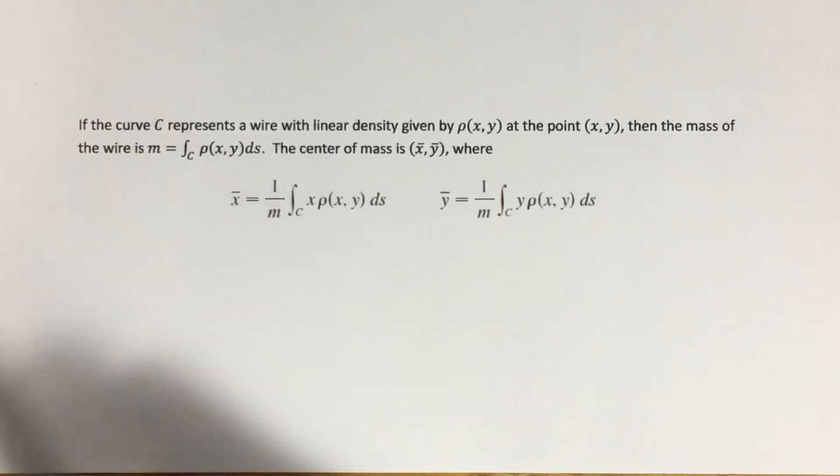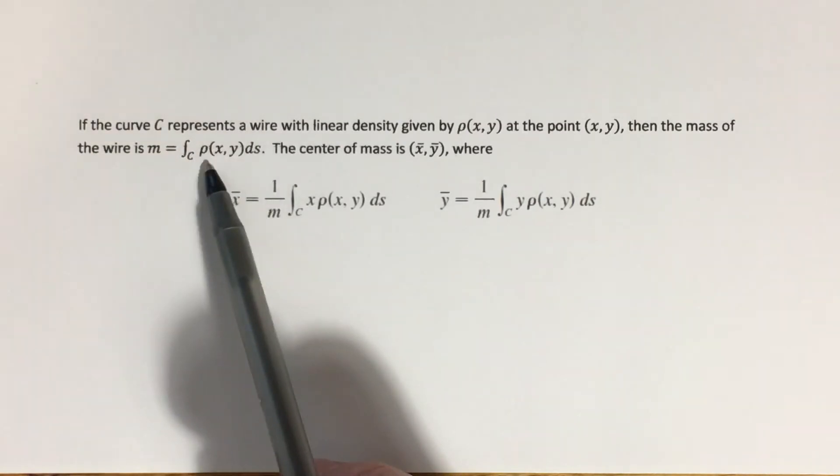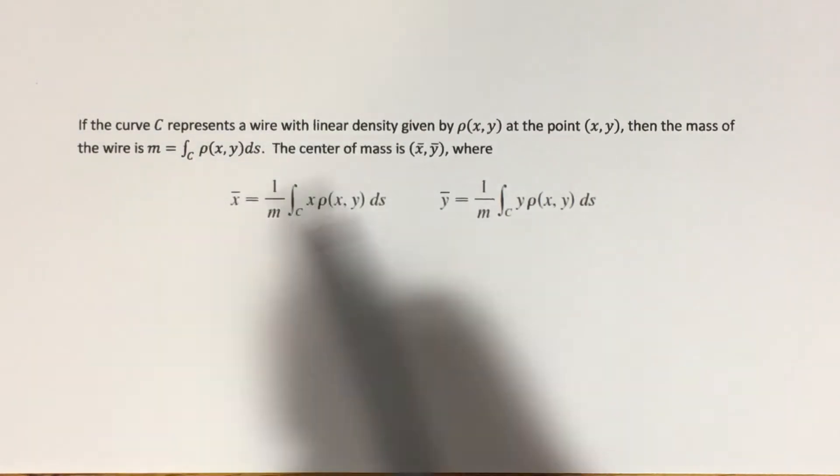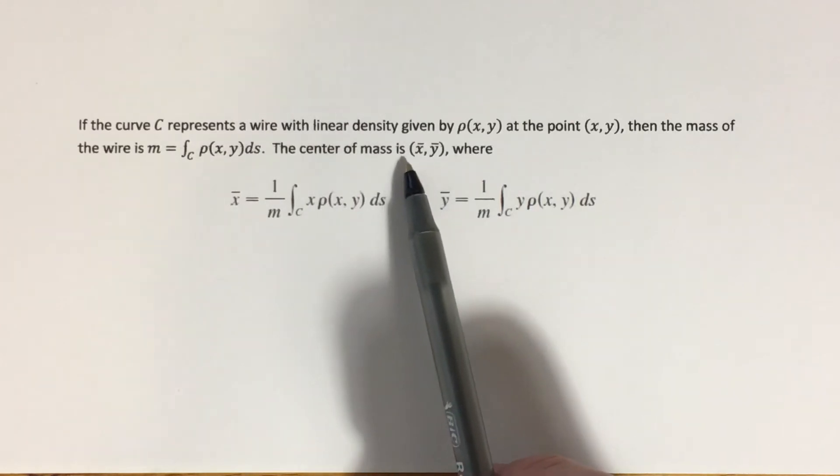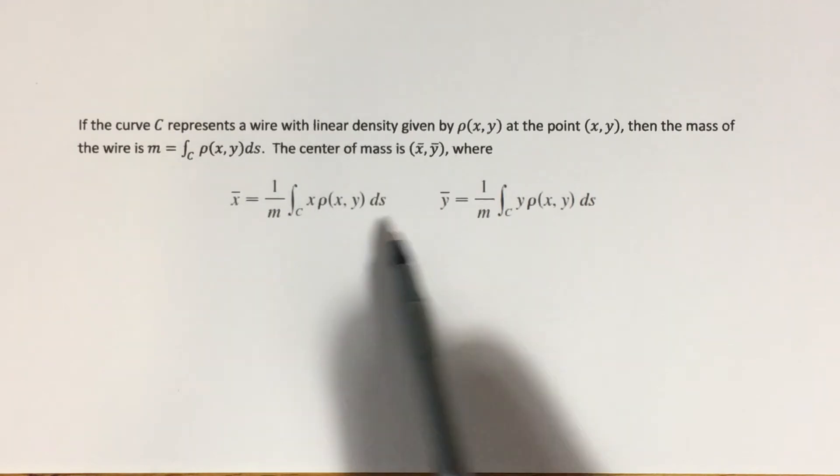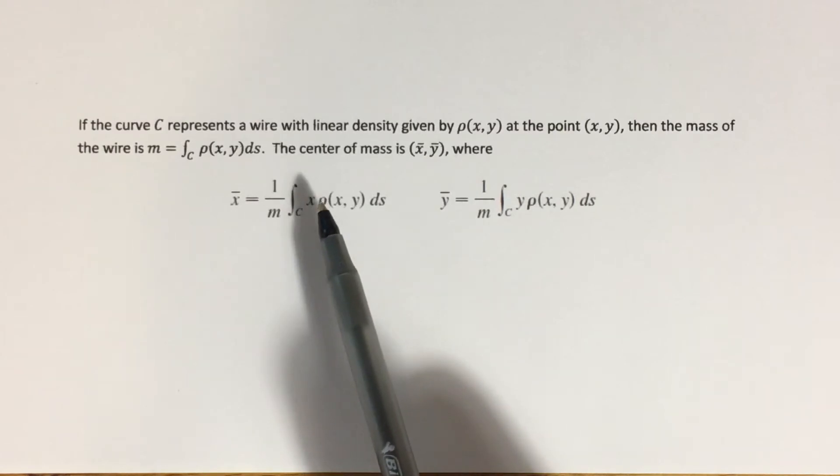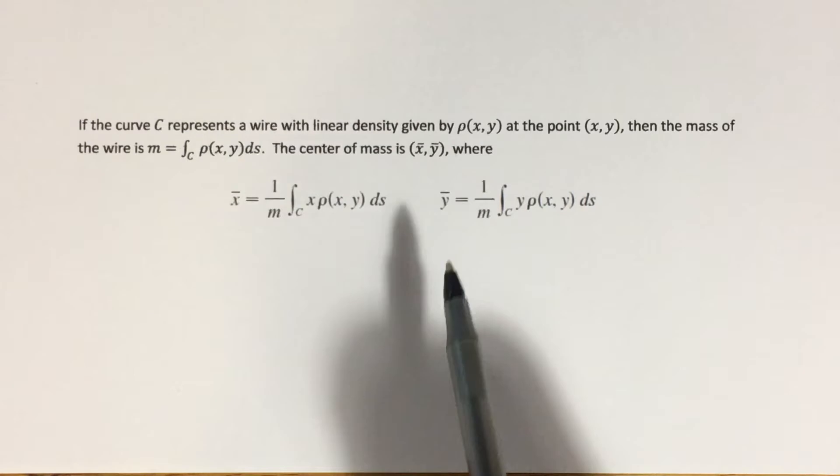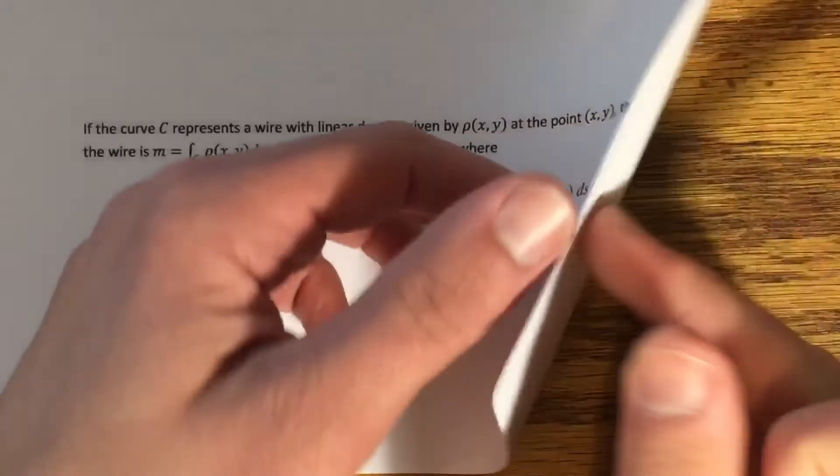Following a similar derivation as what we did for center of mass in the previous chapter, we can show that the mass of a wire, which has a linear density function given by a rho of x y at the point x y, that's the density of the wire at that point, it would be equal to the line integral of your density function ds over the curve representing that wire. Notice the similarity between this and finding the mass of a lamina. It's essentially the same idea, just with a new kind of integral. And then also similar to how we found center of mass back in that chapter, we can find the center of mass of a wire by evaluating these two integrals. One over your mass times the line integral of x rho x y along c, and then similar for y. So let's do an example where we're evaluating center of mass.